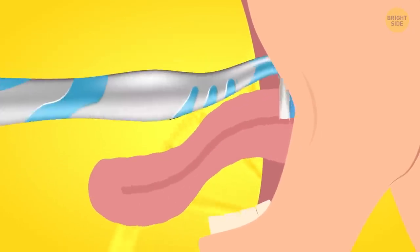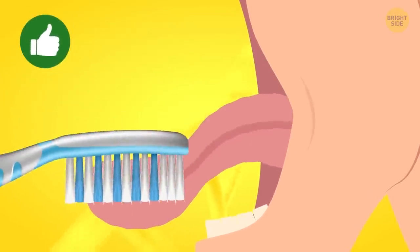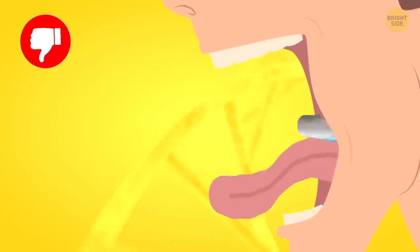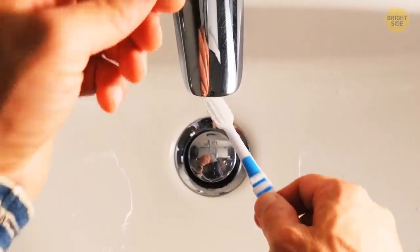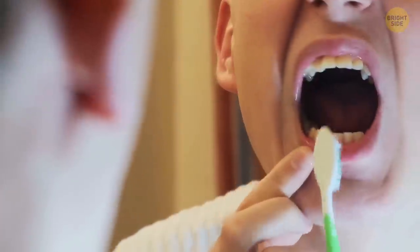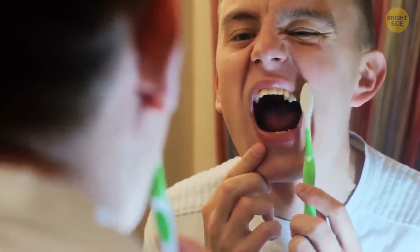Now pull the scraper across the whole surface of the tongue, back to tip. Don't try to do it the other way around. You don't want to swallow all that filth, do you? Now rinse off the stuff you've gathered on the scraper and repeat once or twice more until all the coating is gone from your tongue.